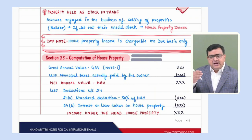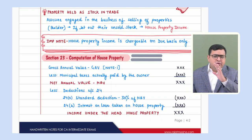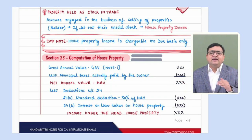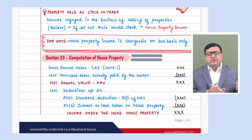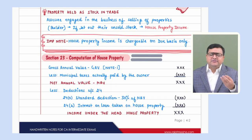After computing GAV and deducting municipal taxes, we get NAV — net annual value. From NAV, there are only two deductions available. There is no other deduction: even if the owner has spent something on repairs or insurance, we don't give such deductions in house property. We give only two deductions: one is a standard or statutory deduction of 30% under Section 24A, and second is interest on loan under Section 24B — if you have taken a loan to purchase, construct, or repair that house.